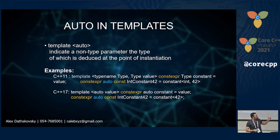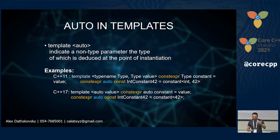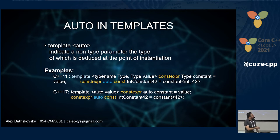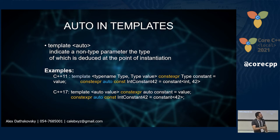Auto in templates. In C++17, auto can be passed as a template non-type parameter and the compiler deduces the type automatically. Previously, to create something like int_constant<42>, you had to write a template taking a type T and a value of that type, then instantiate it with int and 42. With C++17, you just use a single auto non-type template parameter — it knows it's int and 42. If you pass a double, it deduces double.